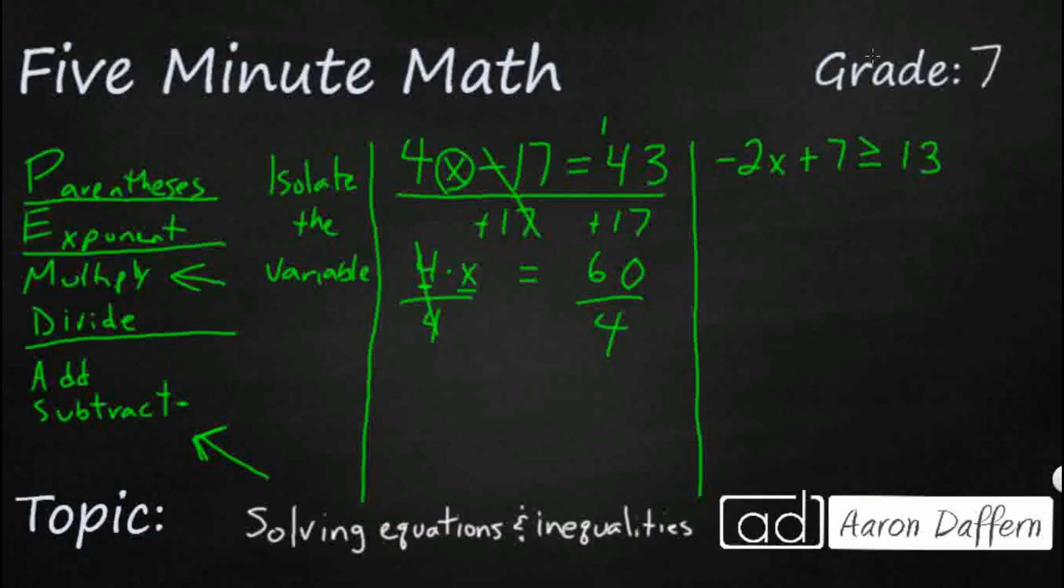And 4 divided by 4 makes 1, so that gets us what we need. 60 divided by 4, that makes 15. So x equals 15. If you were to go in and plug 15 in right here, you would get 60 minus 17 equals 43, which is a true statement.